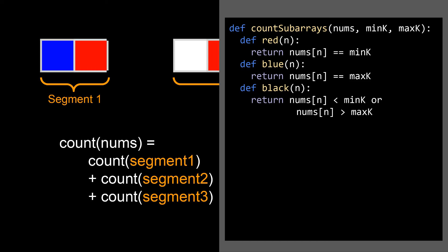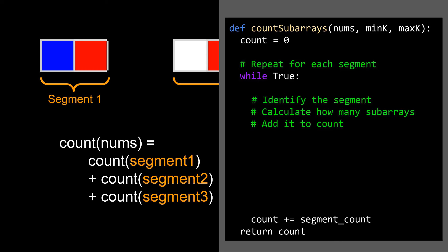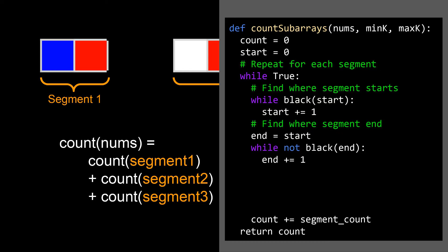Next, we're going to define a variable count which stores our final output. And for each segment, we are going to count how many valid subarrays there are in the segment and then add it to count. To identify where these segments are, we use a start pointer. We write a simple while loop that keeps adding one to start until it lands on a non-black square. This is where our segment is going to start. Likewise, we use an end pointer, and we're going to add one to end repeatedly until it reaches a black square. And this is where our segment ends. Now, how do we count the number of valid subarrays in this segment between start and end? We're going to have to figure that out.